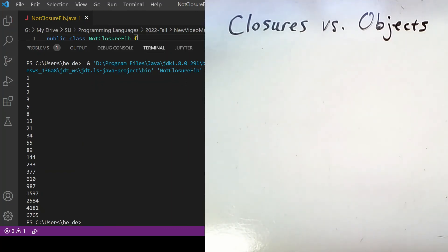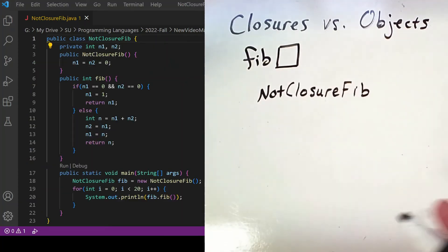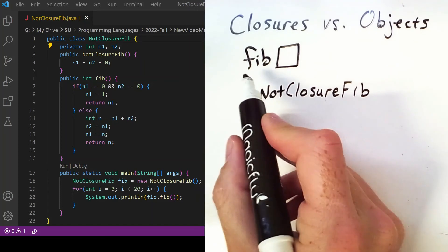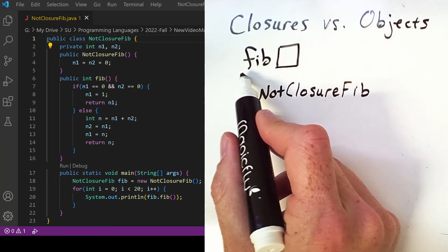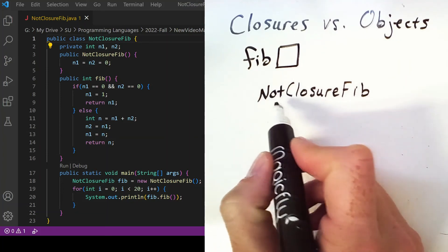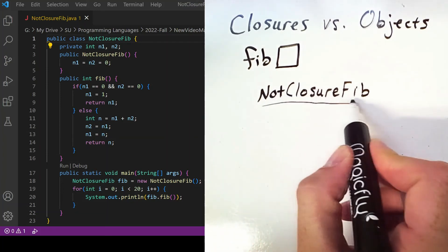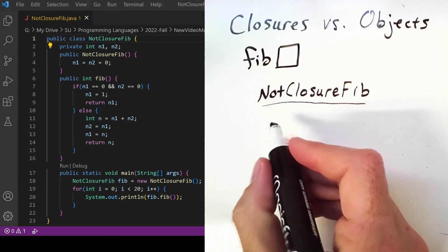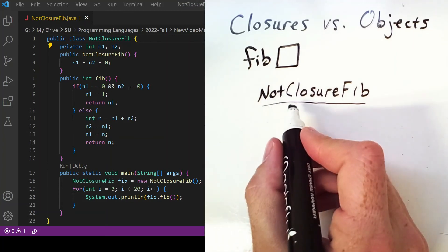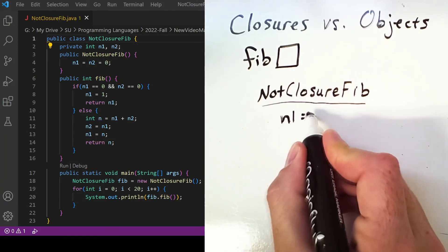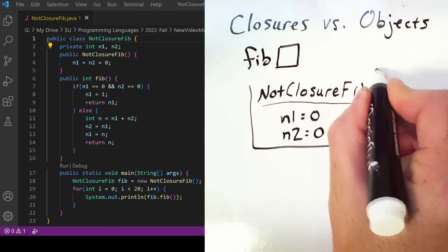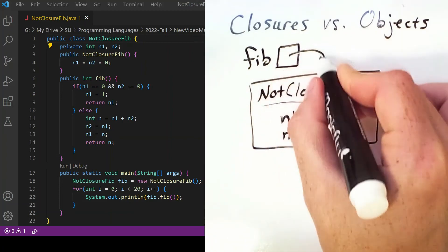Notice that running this code produces the same sequence of Fibonacci numbers as we had in the previous two examples. So in this example, the main function defines a variable—a class variable fib—that points to a newly constructed instance of this class NotClosureFib. And this class contains two private instance variables n1 and n2. They are initialized to zero, and then this class is referred to by that variable in the main method.